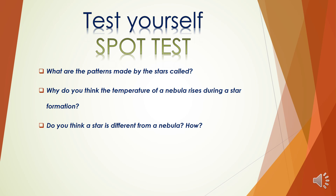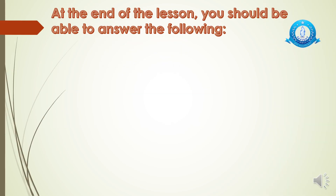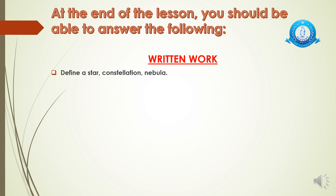This is the end of the lesson — time for written work. Do these question answers in your notebooks. Your previous term notebooks can be used — write very neatly with the date, unit number, and proper margin lines. Question one: Define a star, constellation, and nebula — write down the definitions; they are in the presentation and marked in your books. Question two: What makes a star shine brightly? Think about the composition of the nebula and what makes stars shine when they are born.